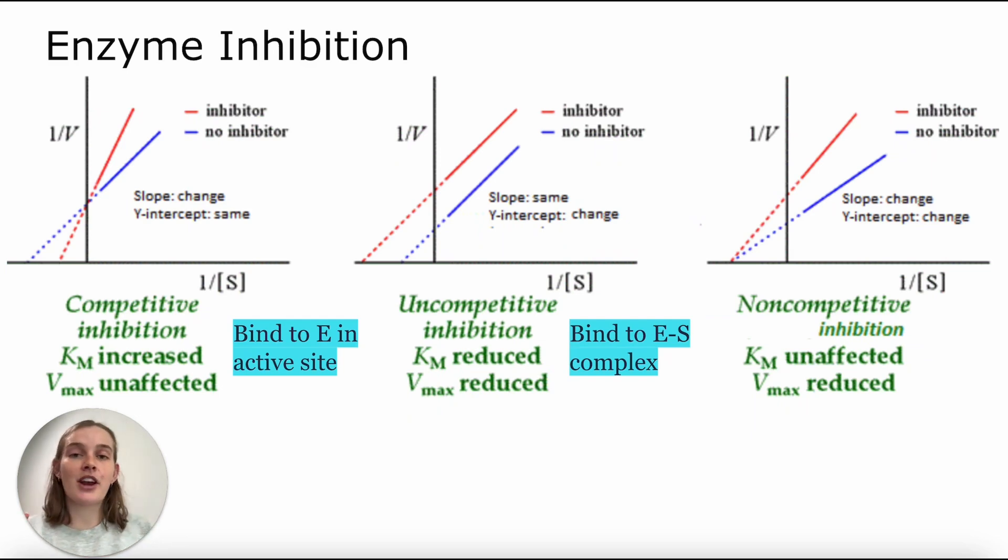On our far right, we have non-competitive inhibition, and that is when we have the inhibitor binding to either the enzyme alone or the ES-complex in an equal fashion. Another thing to note about non-competitive inhibition is that this is binding at an allosteric site. So not in the active site, but instead at another site that may change the configuration of the active site and still prevent binding. Either way, for non-competitive inhibition, we see that Km is unaffected because both the slope and the y-intercept are changing. However, Vmax is again reduced.